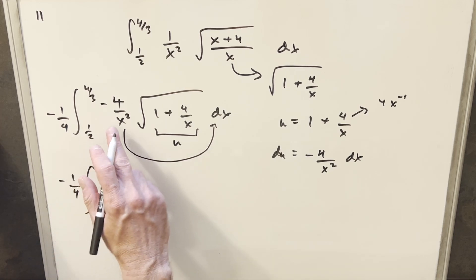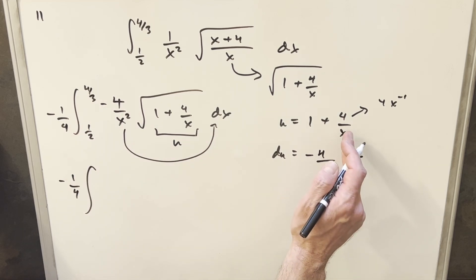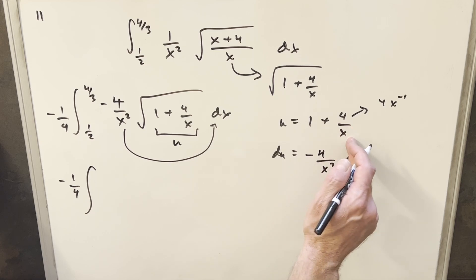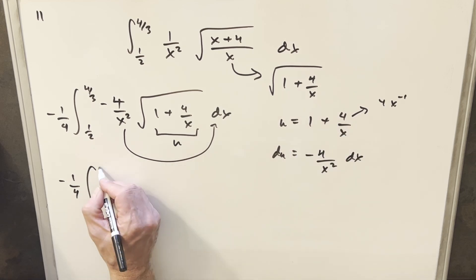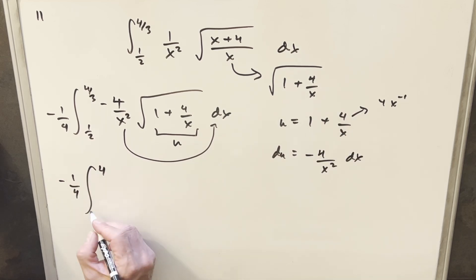So we'll plug in, okay, we'll plug in 4 thirds here. With 4 thirds in the denominator, this is going to be 4 over 4 thirds is just 3 plus 1 gives us 4. And then if we plug a 1 half in here, 4 over 1 half is 8 plus 1, which is 9.